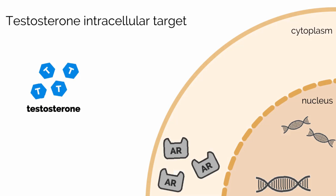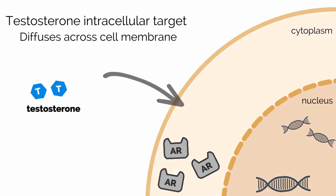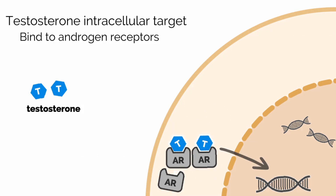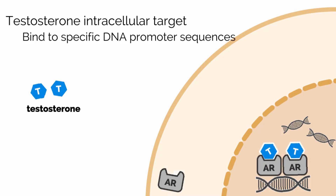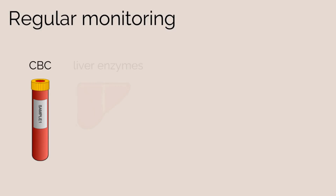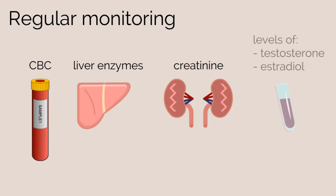Pictured is testosterone in blue, as well as part of a cell with the cytoplasm and nucleus labeled. Testosterone is a lipid and diffuses across the cell membrane to target androgen receptors. Once bound to receptors, they are translocated to the nucleus, where they bind to specific DNA promoter sequences, leading to specific DNA transcription and specific protein synthesis. Other considerations include monitoring CBC, liver enzymes, creatinine, and initial monitoring of testosterone and estradiol while trying to achieve the desired physiological changes.